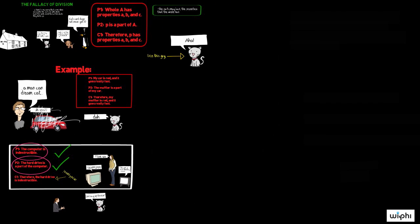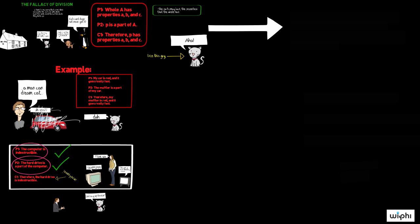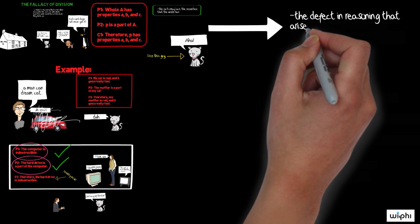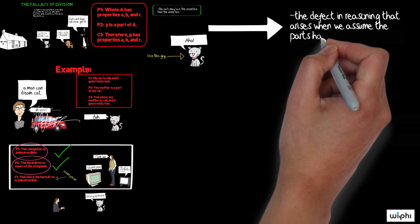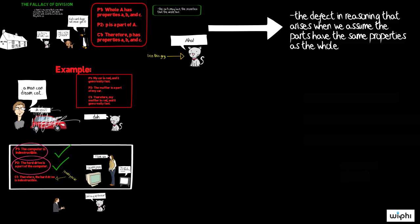So we just learned about the fallacy of division, or the error in reasoning that comes about when a person infers that what is true of something must also be true of its parts. It is important, however, to note that this fallacious reasoning doesn't always lead to a false conclusion.